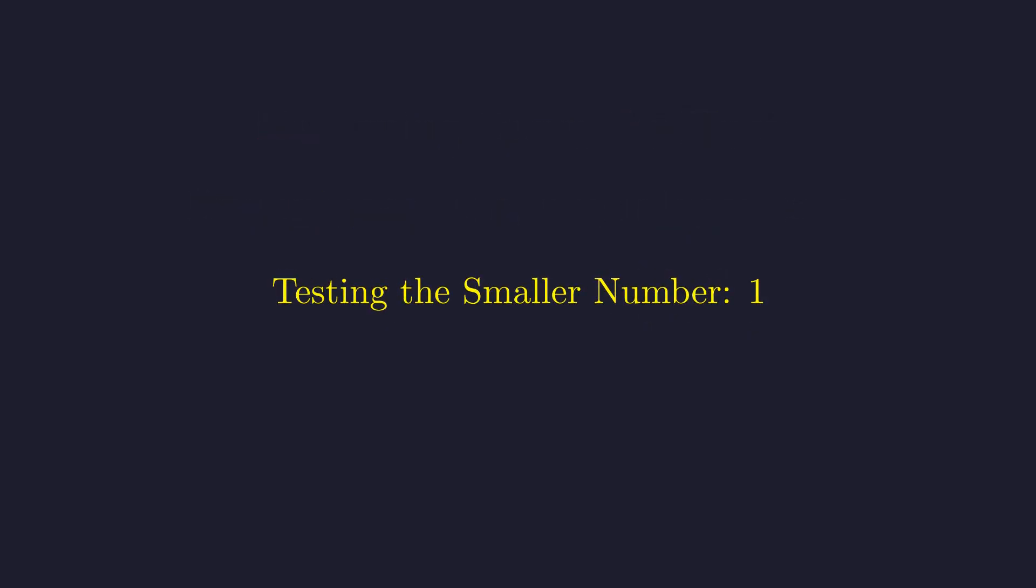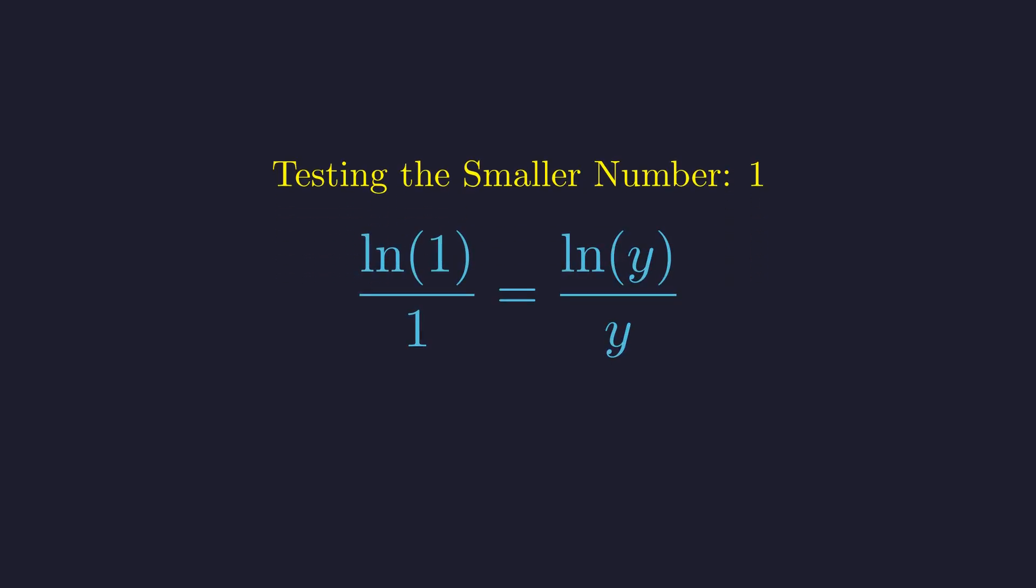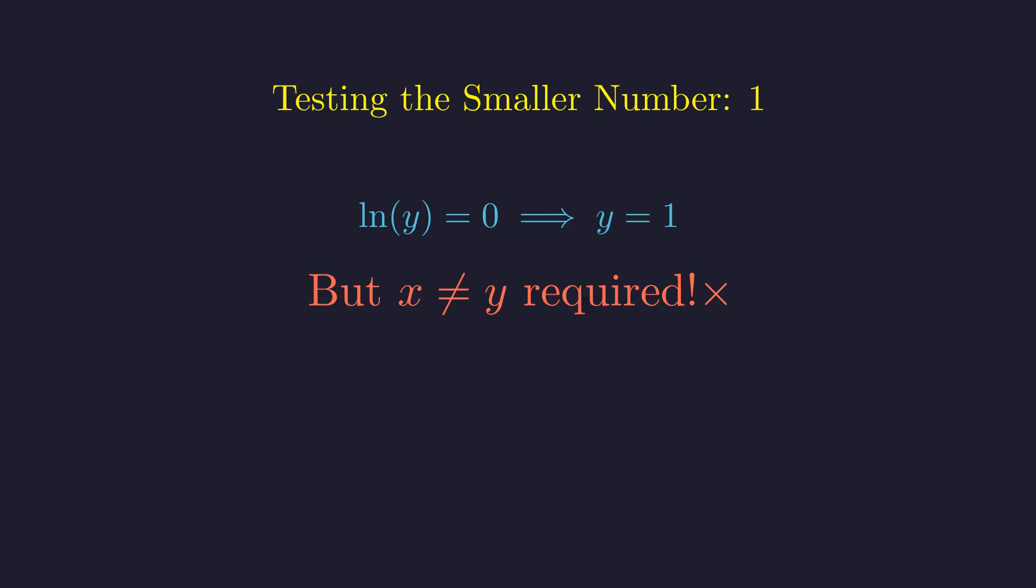Let's start with the possibility that our smaller number is 1. If x equals 1, then we need the natural log of 1 over 1 to equal our function of y. But here's a problem. The natural log of 1 is 0. So we need the natural log of y divided by y to equal 0. This forces y to equal 1 as well. But wait, we need x and y to be different. This violates our condition, so case 1 is out.